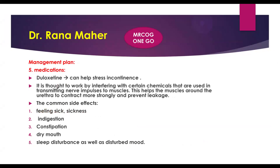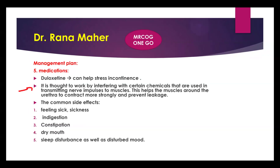Coming to medications — the main focus when the patient refuses surgery. For any medication, mention the name, dose, mechanism, and side effects. The medication here is Duloxetine. It works on the central nervous system, interfering with certain chemicals to increase the tone of the muscles around the urethra. Common side effects include nausea, vomiting, indigestion, constipation, dry mouth, sleep disturbance, and disturbed mood — because it acts on the CNS.